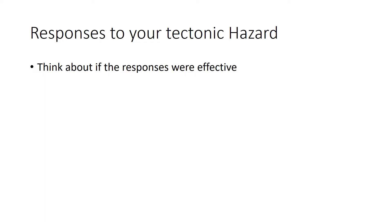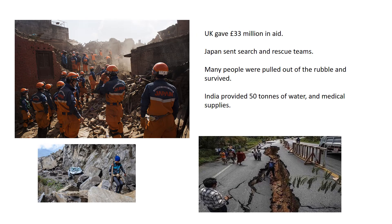Having looked at the causes and consequences, we now need to consider the responses to the hazard and whether those responses were effective. Some of the short-term responses included the UK giving 33 million pounds in aid, which contributed to buying things like medical supplies, food, water, and shelter for homeless people.